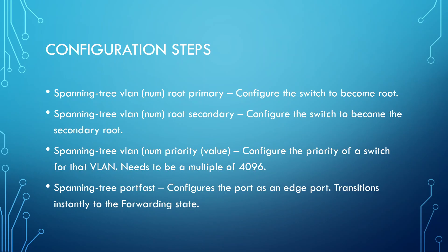Let's talk about the configuration steps. The main commands are: 'spanning-tree VLAN [number] root primary' - configures the switch to become the root bridge. 'Spanning-tree VLAN [number] root secondary' - configures the switch to become the secondary root, our backup plan in case the primary root bridge fails. 'Spanning-tree VLAN [number] priority [value]' - hard-codes the spanning tree priority as any multiple of 4096. And 'spanning-tree portfast' - allows a port to transition from blocking into forwarding instantly, enabled on edge ports connecting to printers, computers, IP phones.